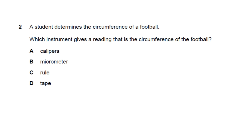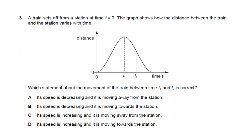Question 2: a student determines the circumference of a football — which instrument gives the reading? Calipers — no, not suitable for large round objects. Micrometer — no, suited for very small dimensions. Ruler — no, it's linear and doesn't conform to a round surface. A tape — yes, a tape measure gives the accurate value of the circumference of the football.